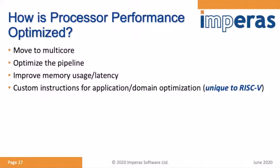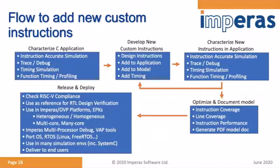Now I'll talk about custom instructions. As we look to optimize performance, moving to multi-core is an early good decision. Optimize the pipeline, dedicate the right processor in the right place, and look at data movement to optimize network interconnects. Custom instructions lend themselves well to optimizing both the application and those interconnections. Starting with C code, you profile your application to find hotspot routines that could form useful instructions.